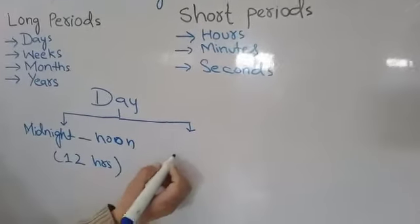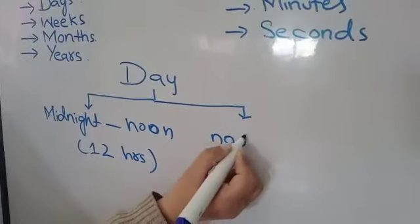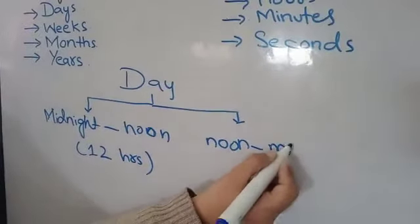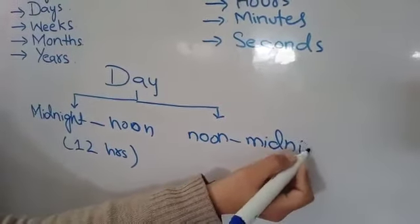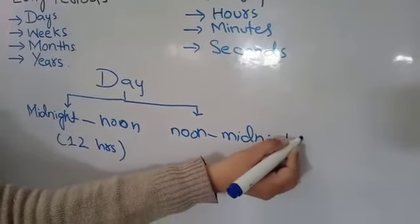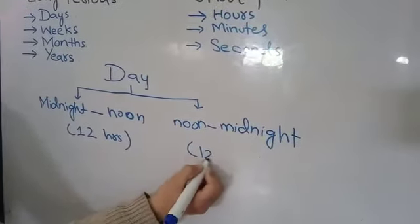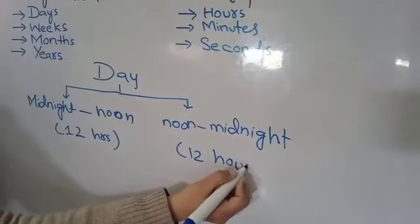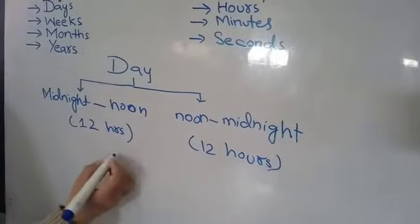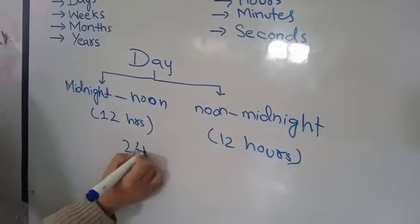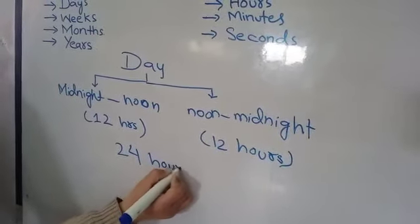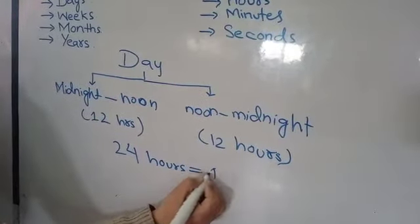And second half from noon to midnight, again twelve hours. So there are twenty-four hours in one day.